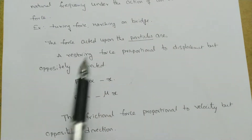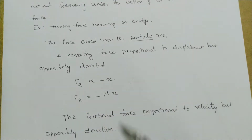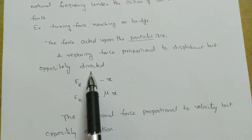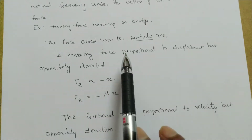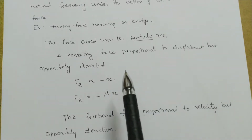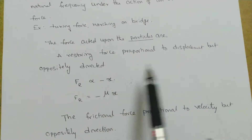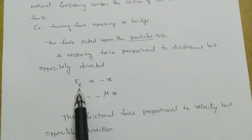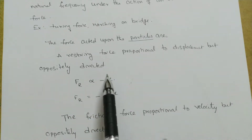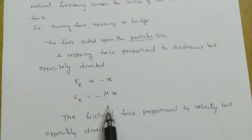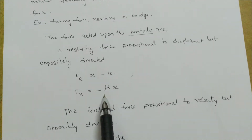The forces acting on particles are generally of different types. First, a restoring force proportional to the displacement but oppositely directed. By application of a certain force, a deforming force develops and the restoring force returns the body back to its previous position. The restoring force is directly proportional to minus x, so Fr = -μx, where μ is called the force constant, spring constant, or material constant.